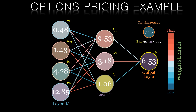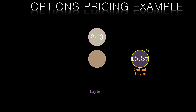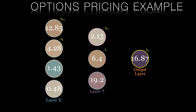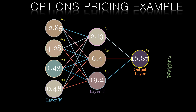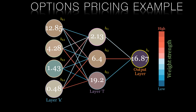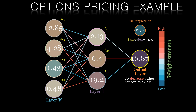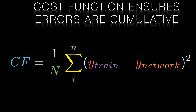Bear in mind this is the result of one training example. If we supply the market data and correct option price of a second example, we'd expect a different result with a different loss — in this case, our model has overpriced the option by $4.35, so we'd need to decrease the weights and biases. Over the course of a whole epoch, we'd expect to see a range of losses, some positive, some negative. Our mean squared error cost function will ensure that these losses are all cumulative for the cost for that epoch.